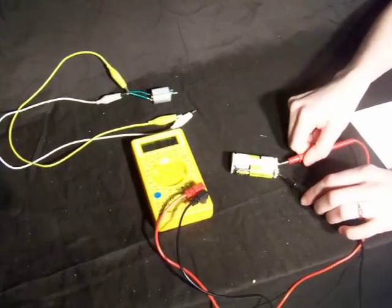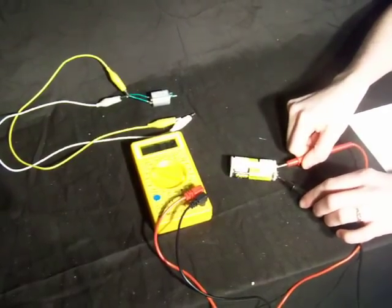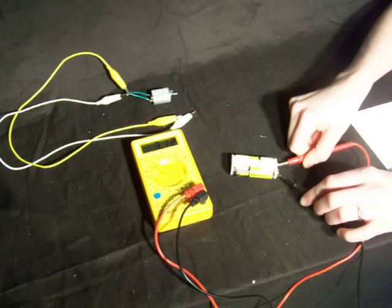The reading is 3.12 volts. If I touch the leads backwards, then we would be reading a negative voltage.